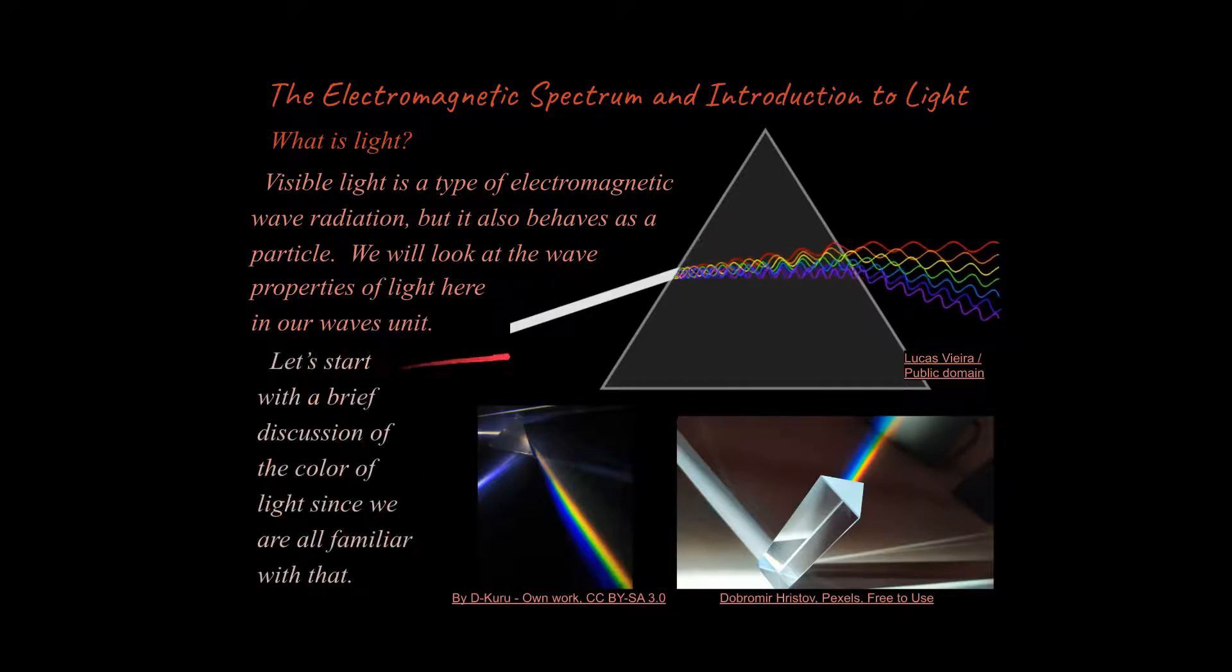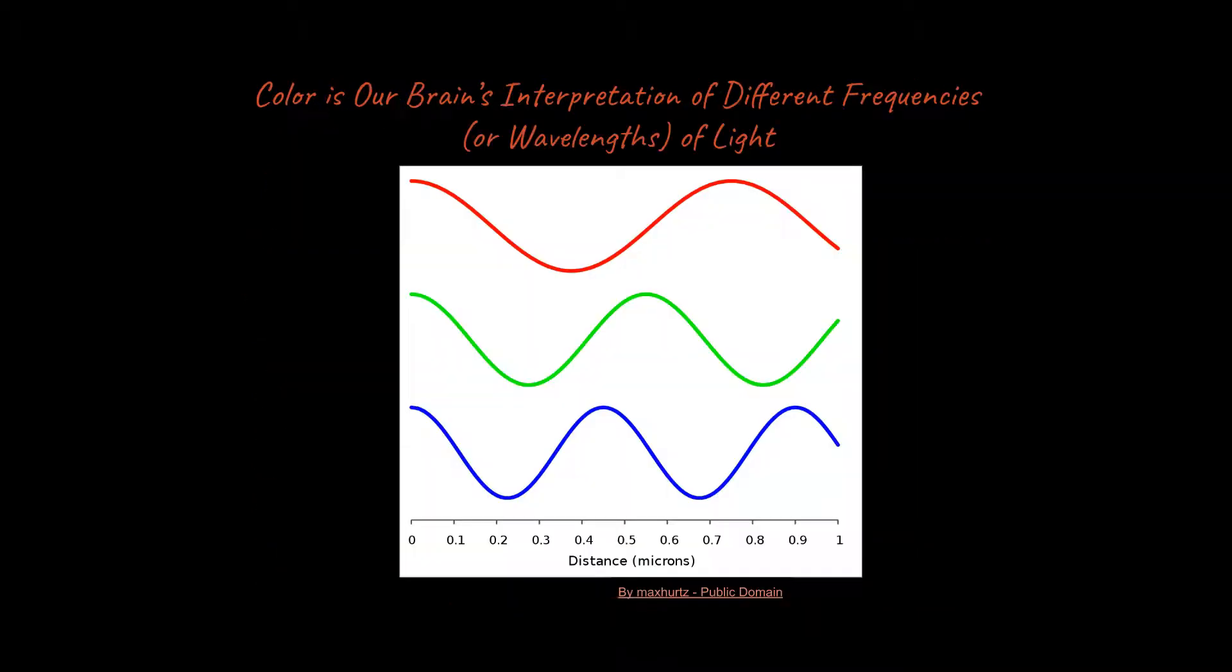And since we're all familiar with color, I want to start with color. So hopefully you've seen a prism before. They can be very beautiful. They can break up white light into the different colors or spectrum of light, like a rainbow effect that you see over here. Very beautiful things. And there's a lot of physics going on there too. All right, so let's talk a little more about color.